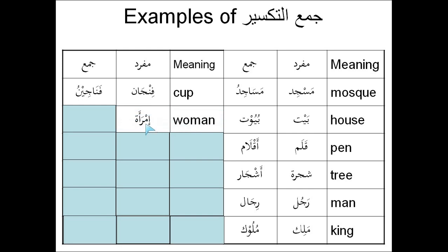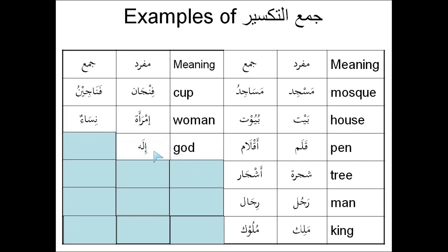Woman: Imra'ah. Sometimes the plural of a word is completely different from the singular. Here is an example: Nisa'un. There is no such word as Imra'at. God with a little g: Ilahun, plural Alihatun. Traditionally, the Alif between the Lam and the Ha is not written.